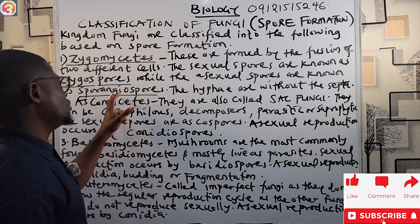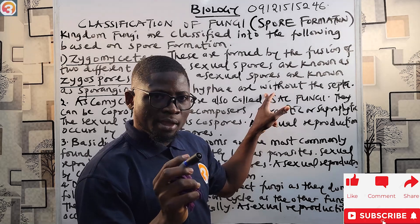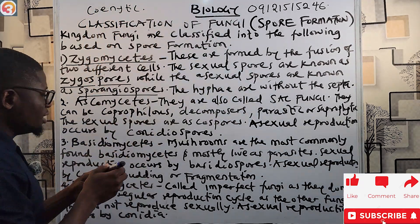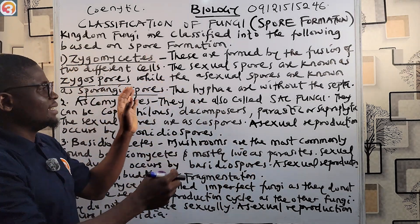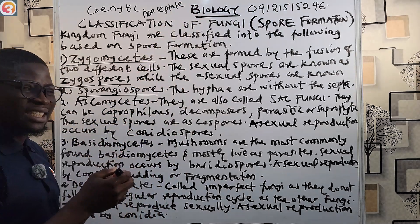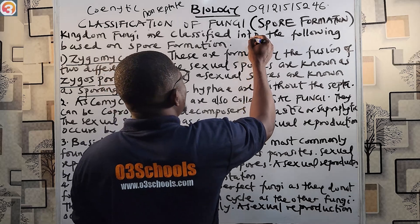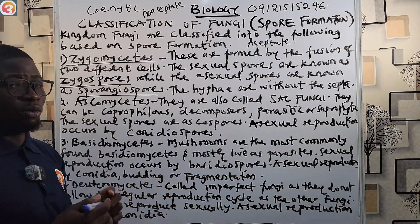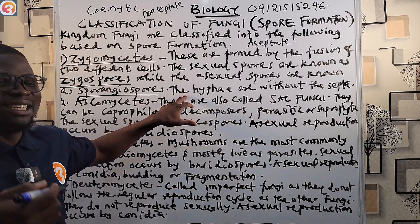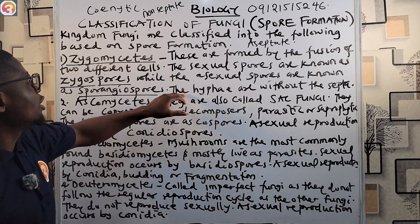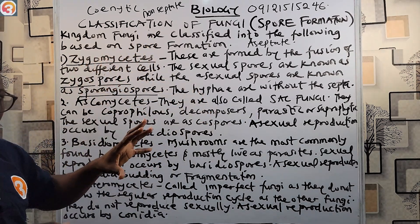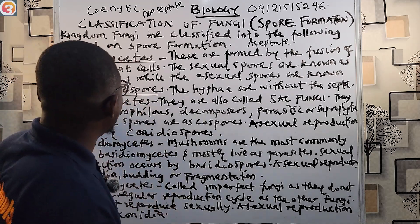So take note: the sexual spores of zygomycetes are zygospores, and the asexual spores are sporangiospores. The hyphae of zygomycetes are without septa — that means they are coenocytic. We can also say they are non-septate or aseptate. So the hyphae of zygomycetes do not have septa; they are aseptate, non-septate, and we call them coenocytic hyphae.